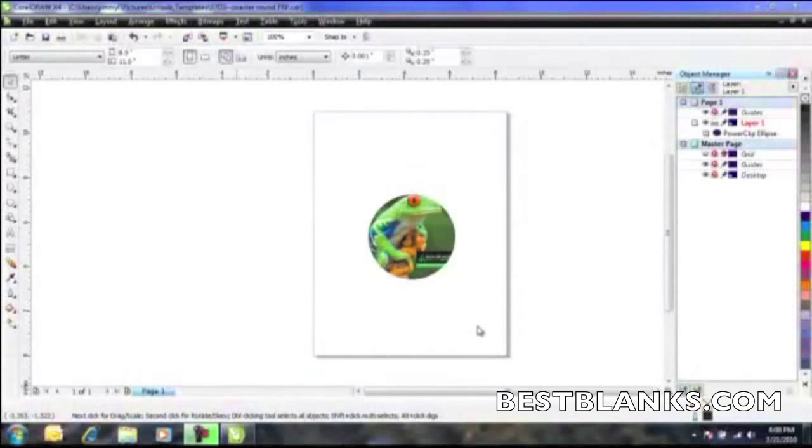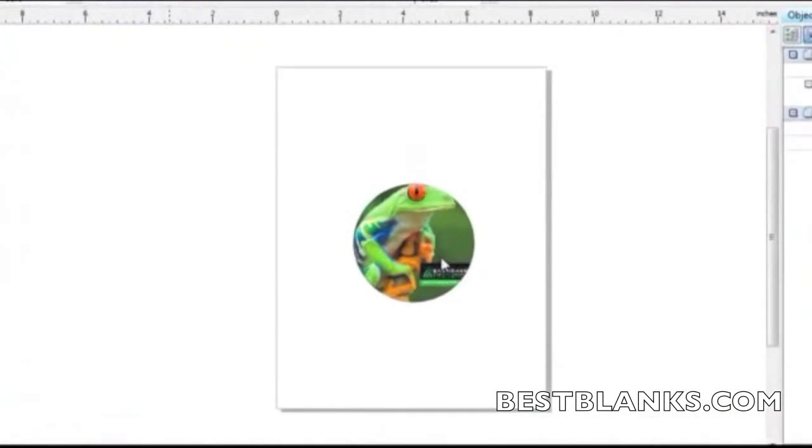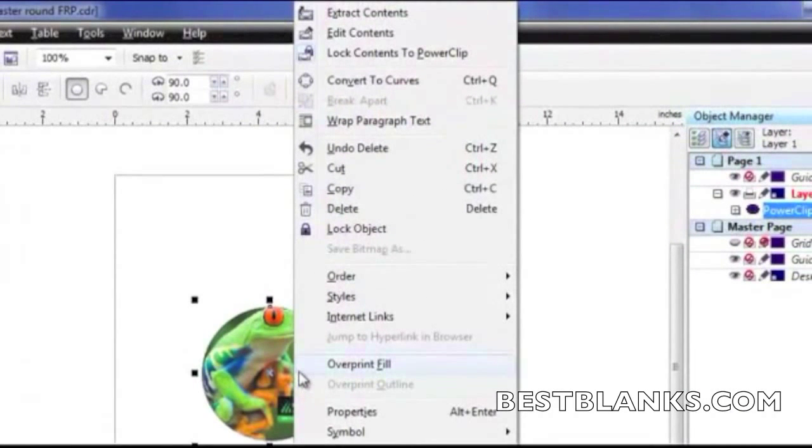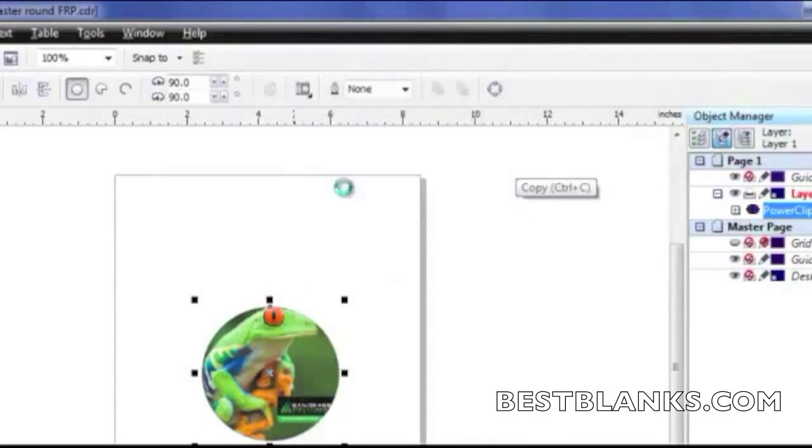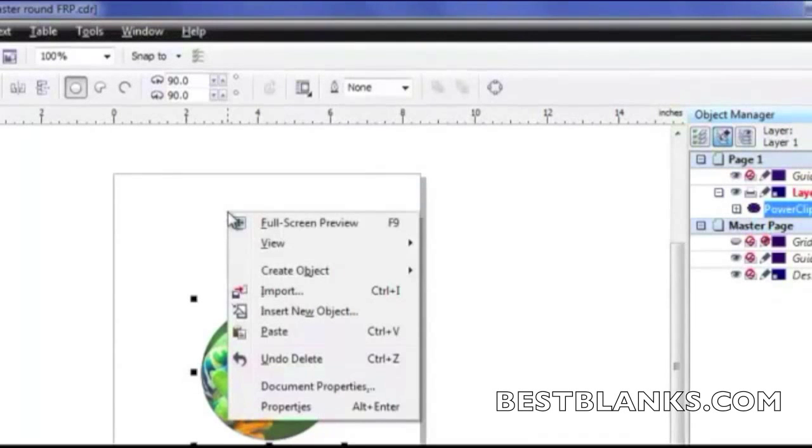If you plan to print more than one image on the same sheet of paper, then use a copy and paste function to place as many designs in the print area as possible. Right click on the design, then left click on copy. Now right click and select paste.